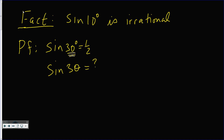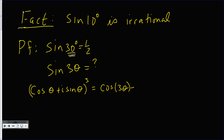We are going to prove this using de Moivre's theorem. We know that the cosine of theta plus i times the sine of theta, to the third power, on one hand equals cosine of 3 theta plus i times the sine of 3 theta. As long as the power is an integer, you multiply the power by the angle.